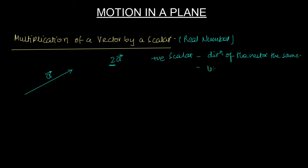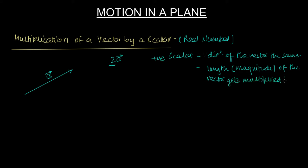The direction remains the same, and the length of the vector — which represents the magnitude — gets multiplied by the scalar. So the magnitude of the vector gets multiplied by the scalar. In this case, 2 is a positive quantity, so the direction remains the same and the magnitude becomes twice.